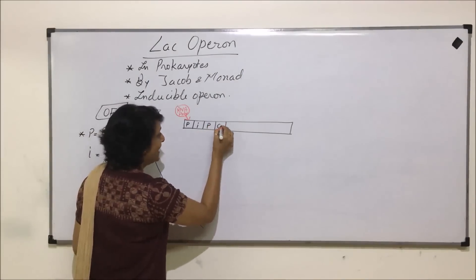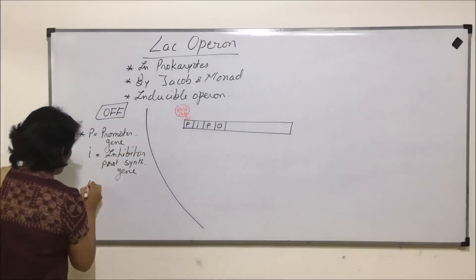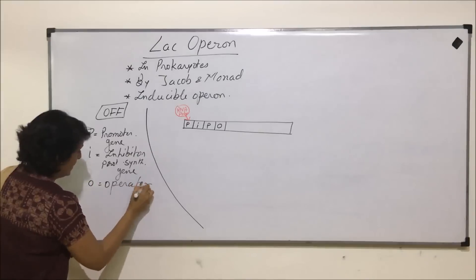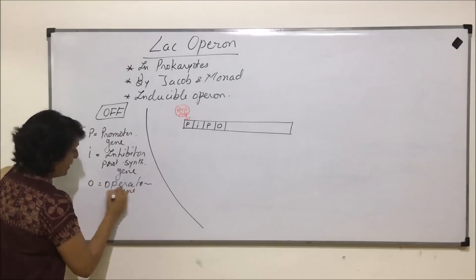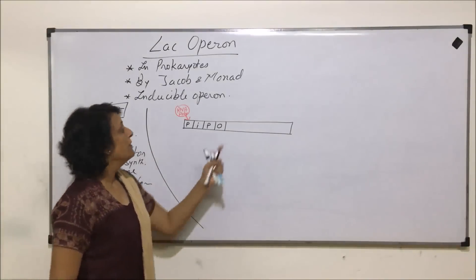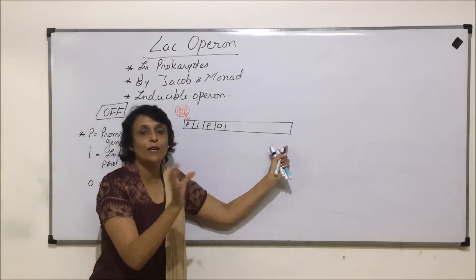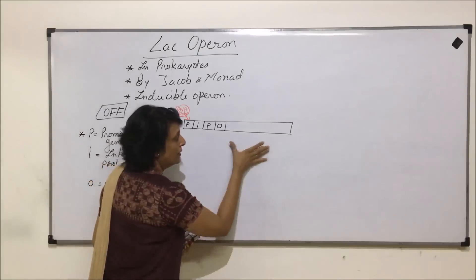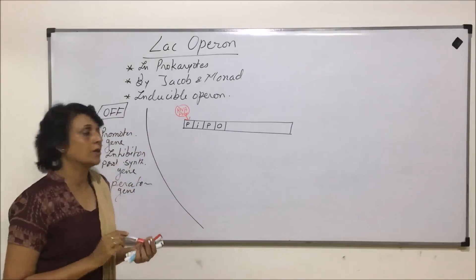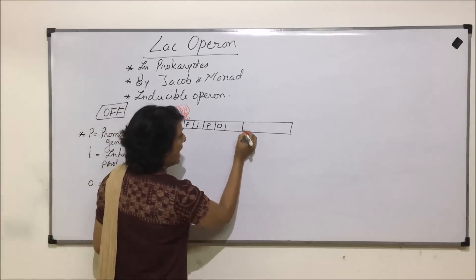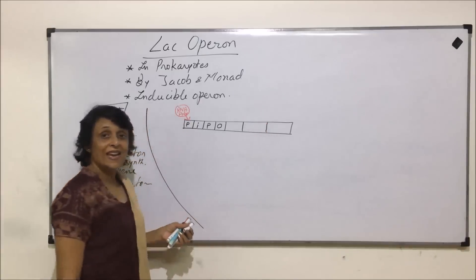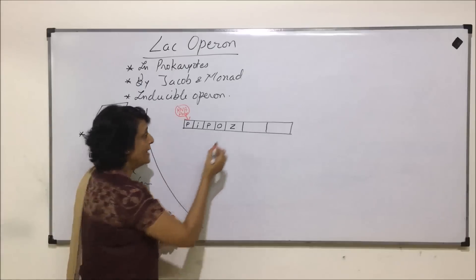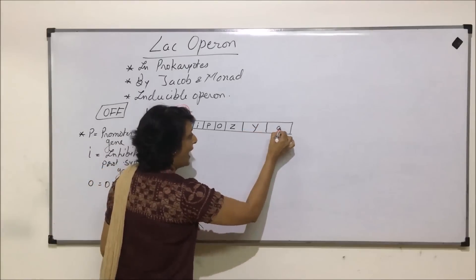So this is I — the inhibitor gene. Another thing is a promoter gene and then an operator gene. O stands for operator gene, which is the one that is actually going to regulate the expression of the structural genes. And following that in this arrangement are going to be the structural genes.